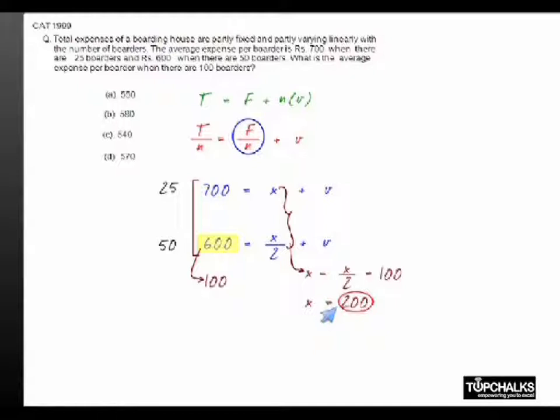We will use this information to find out what would happen if there were 100 people staying in the boarding house. So we need to find out this value, the variable cost or the total cost per head. Now what would we have on the right hand side? Instead of x, it will now become x by 4 and the variable cost will remain as b.